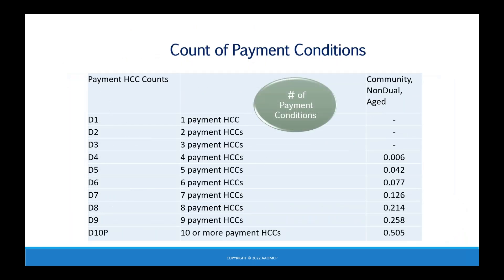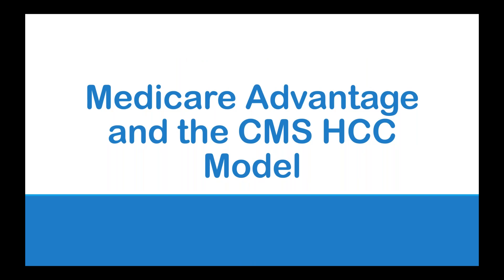The final component in calculating a risk score is the number of payment conditions. If the beneficiary has one, two, or three HCCs, there is no additional weight. But once a patient has four or more HCCs, an additional weight for payment condition count is added. When we do risk score calculation in the next module, we'll show Harriet with three HCCs and then with four. That is the Medicare Advantage and CMS HCC model — next we'll look at calculating a risk score.